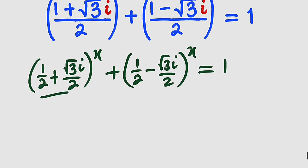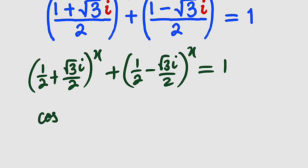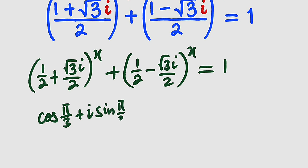To transform this into polar form, we know that 1 over 2 is the same thing as cosine of pi divided by 3. So cosine of pi over 3 equals 1 over 2. Likewise, sine of pi divided by 3 gives us root 3 divided by 2. So we write: cosine of pi over 3 plus i sine of pi over 3, raised to the power of x.